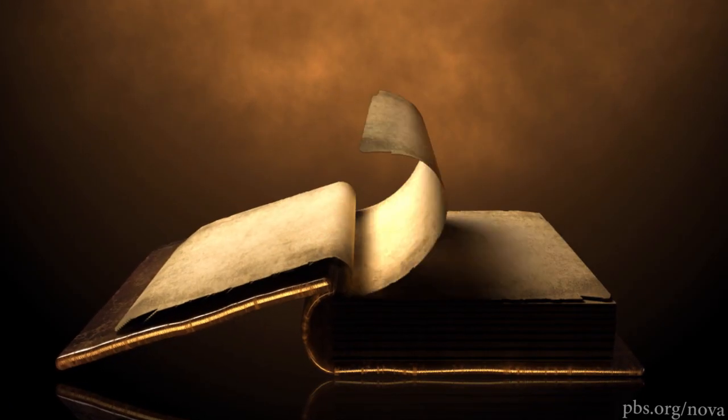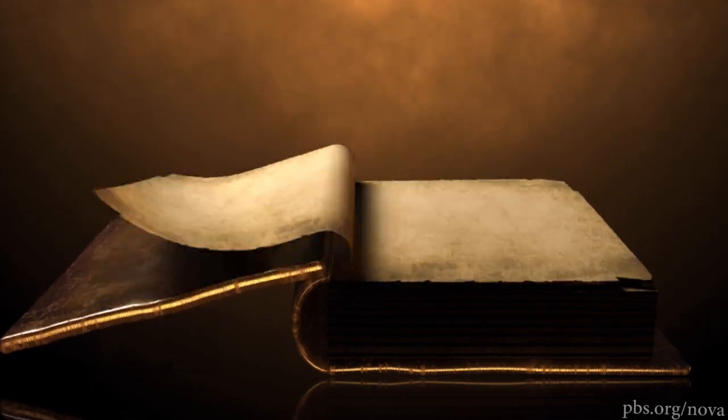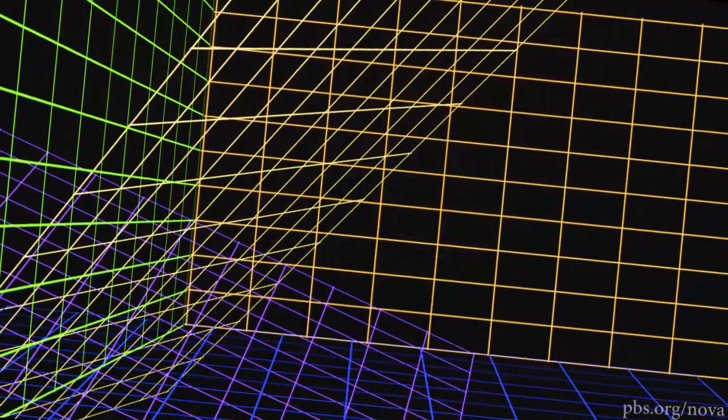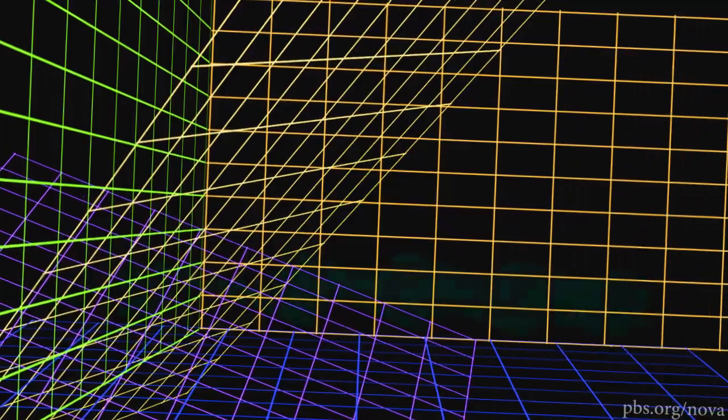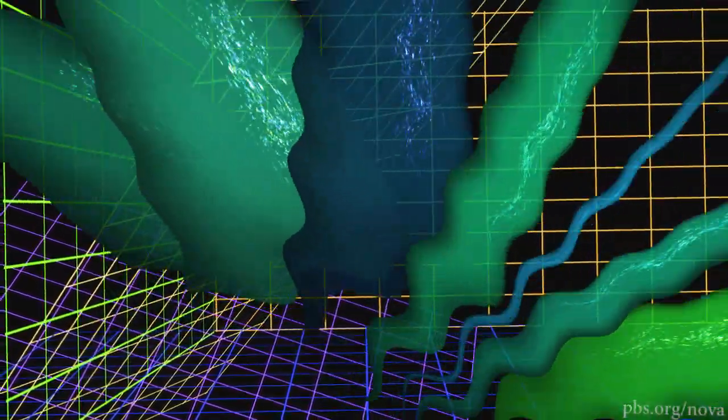But our brane wouldn't be the only one. There could be other branes with other universes. It's like how a three-dimensional book has many two-dimensional pages, but our multiverse book is ten-dimensional and our universe is on one of the many three-dimensional pages.